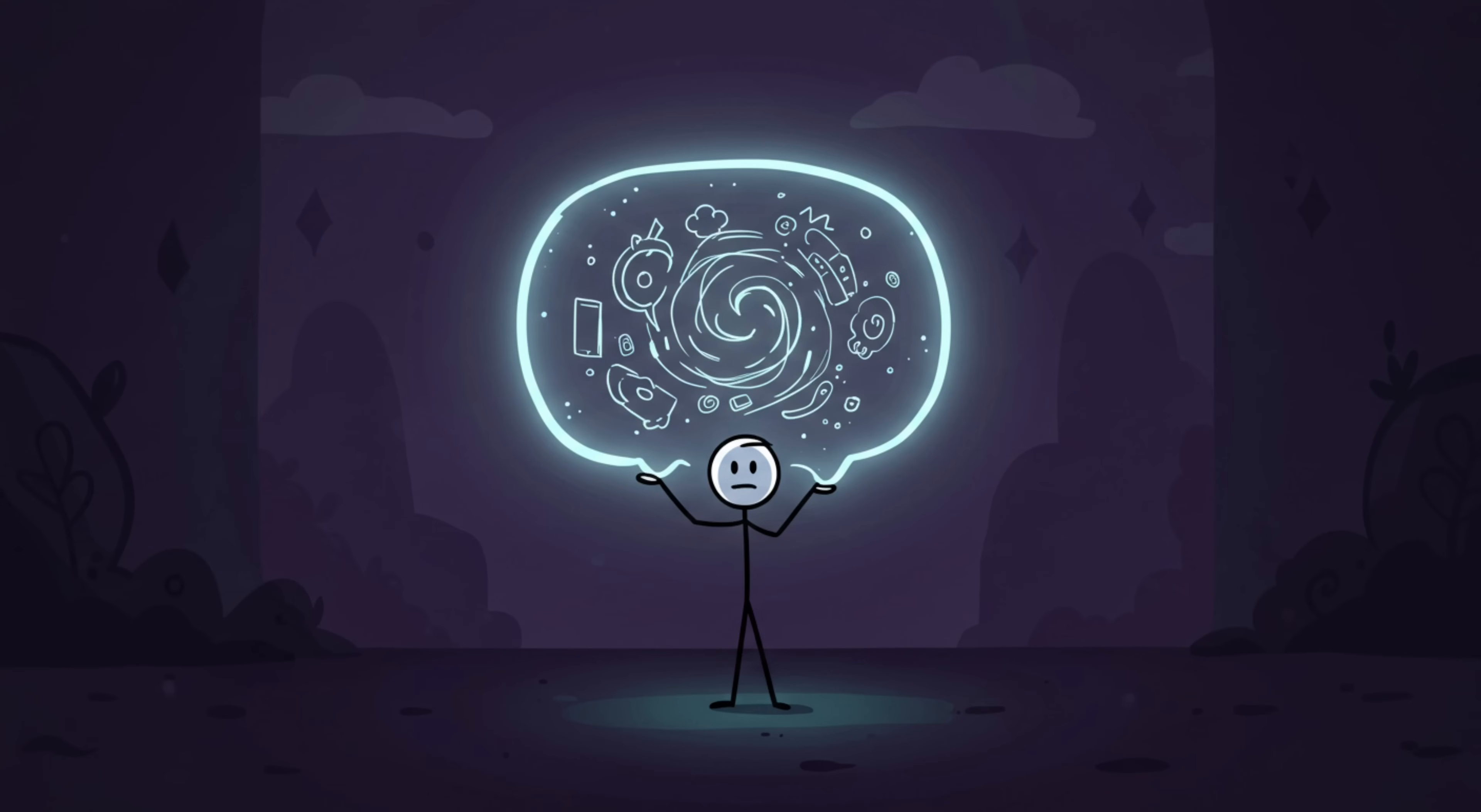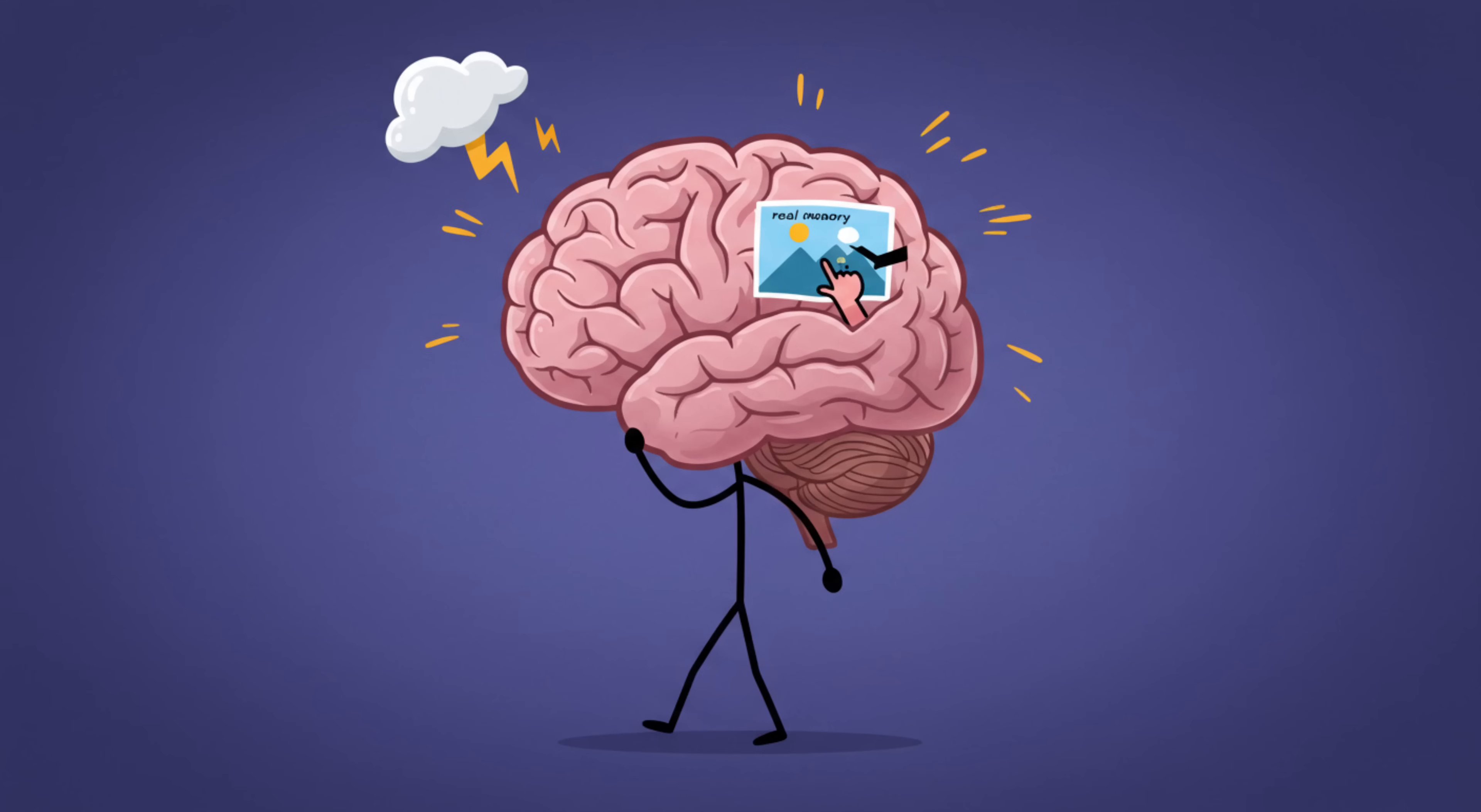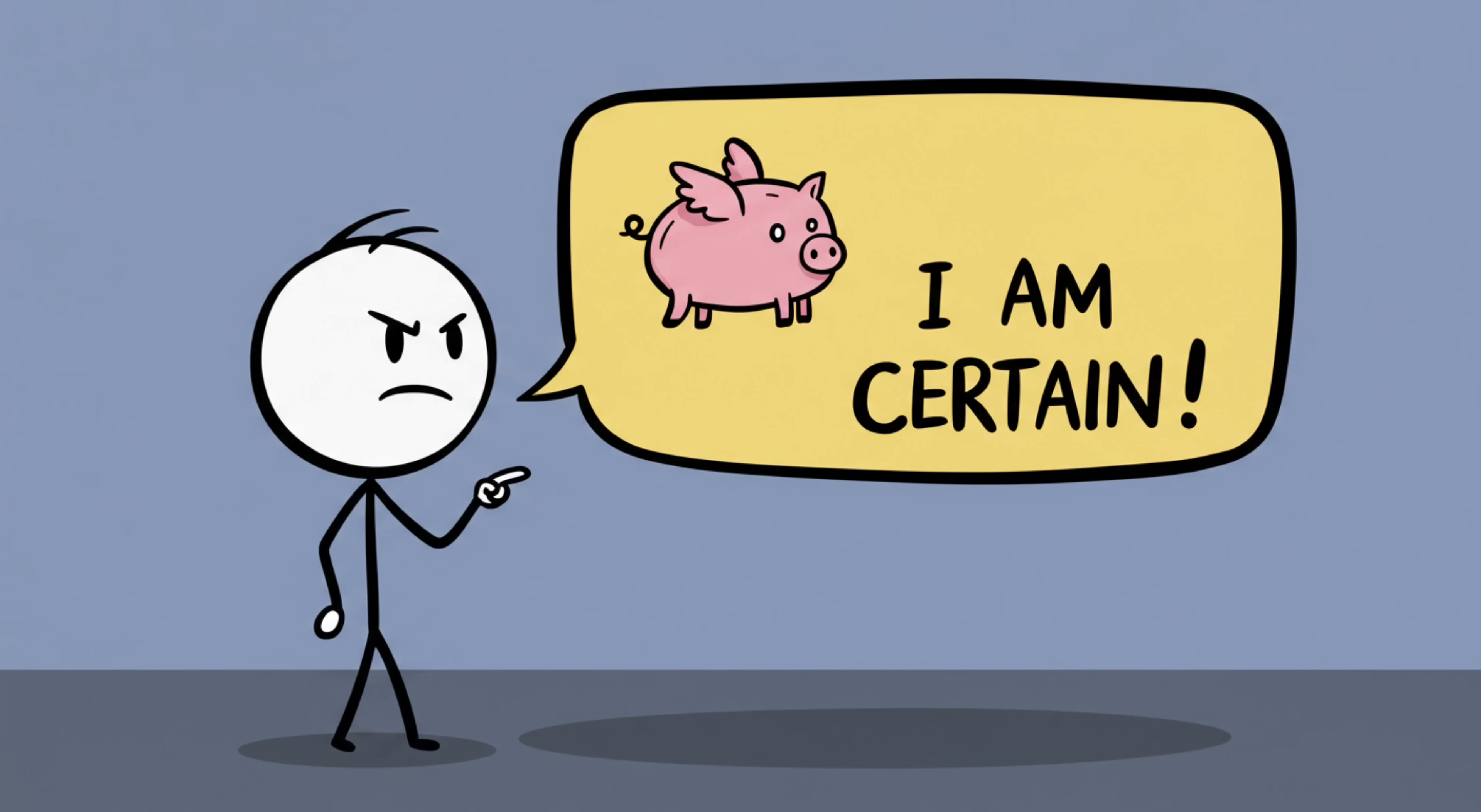Number 6, Fake Confidence Memories. Okay, this one is sneaky. Under stress, your memory doesn't just blur details, it sometimes replaces them with fake ones. And here's the kicker: you'll feel more confident about those fake memories.